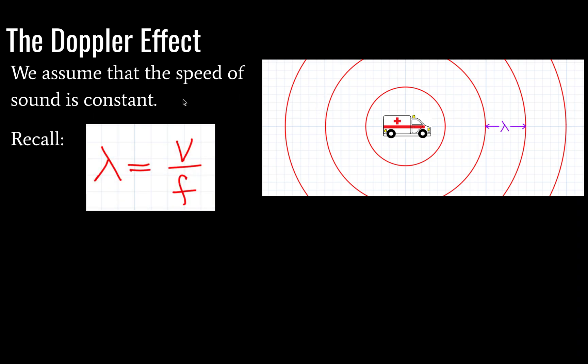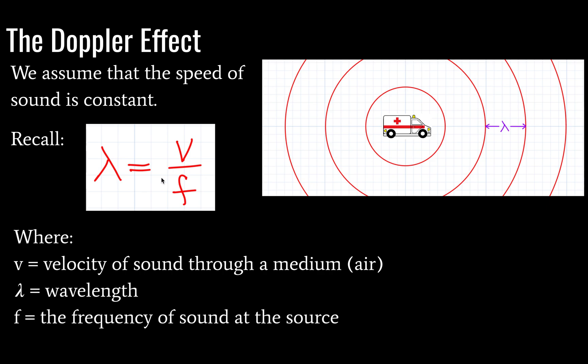So we're going to assume that the speed of sound is constant here, at least for our initial setup. Later on, we'll see that that is not the case for all of our scenarios. But for right now, it is. Okay, so recall that wavelength is equal to velocity divided by frequency. We've already defined frequency. And our velocity in this case would be the speed of sound, roughly 340 meters per second, depending on the temperature, and maybe a couple of other factors. So there are definitions. Velocity of sound is our medium. For v, lambda is wavelength and f is the frequency of sound at the source. At the source. That is important.